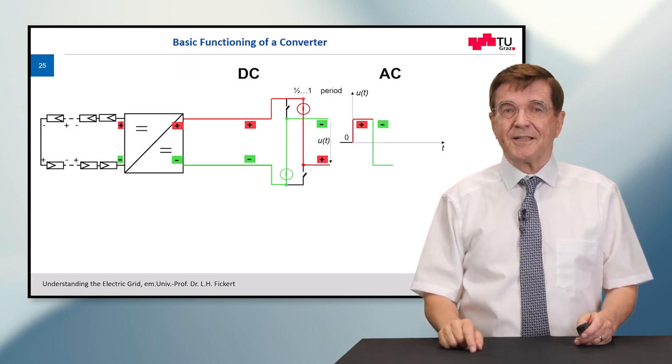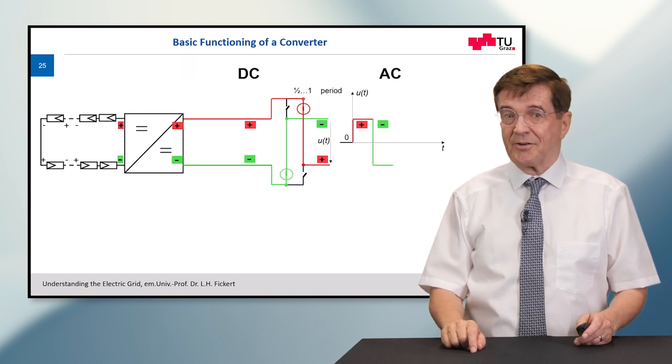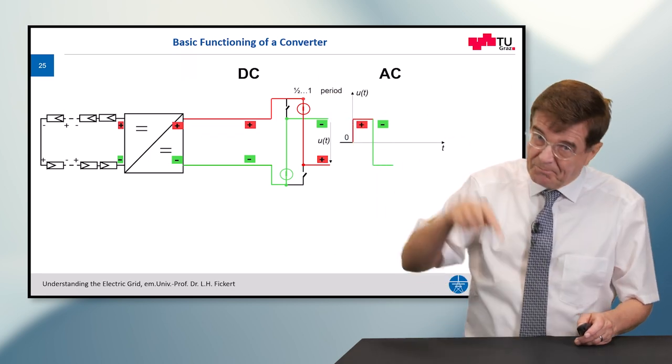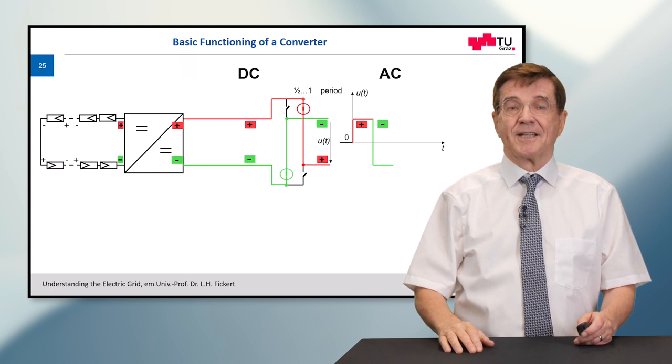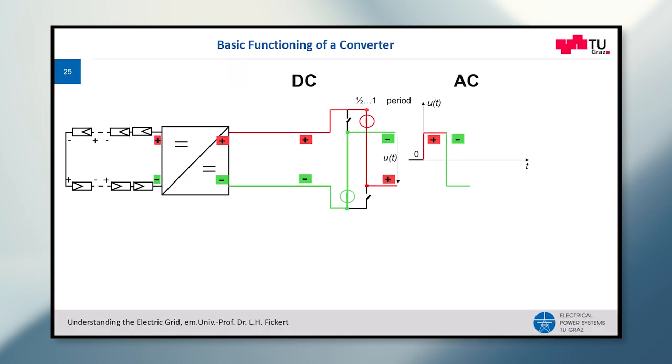Short time later it will be changed. Now the top right and the bottom left switches are closed, and you see accordingly the output of the converter has changed the polarity. Now it's minus, and after half a period again it changes back and changes back and so on. So now we have generated AC current and AC voltage.